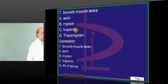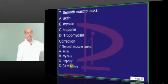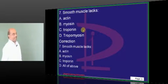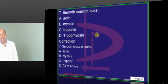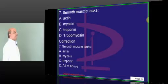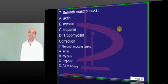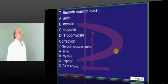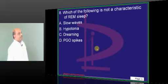Smooth muscle has neither troponin nor tropomyosin. The option should be 'all of the above.' These are called post-translational defects in the question paper — after the paper gets printed, errors are identified during discussion preparation. So far, two errors identified.